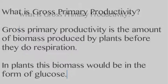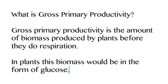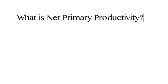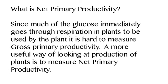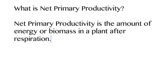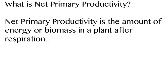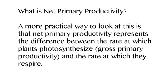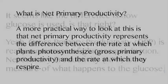What is gross primary productivity? Gross primary productivity is the amount of biomass produced by plants — or autotrophs — before they do respiration. Essentially, how much glucose is made by autotrophs. What about net primary productivity? We use net primary productivity because it's easier to measure than gross primary productivity. It's the amount of energy or biomass that exists after a plant or autotroph has done respiration.